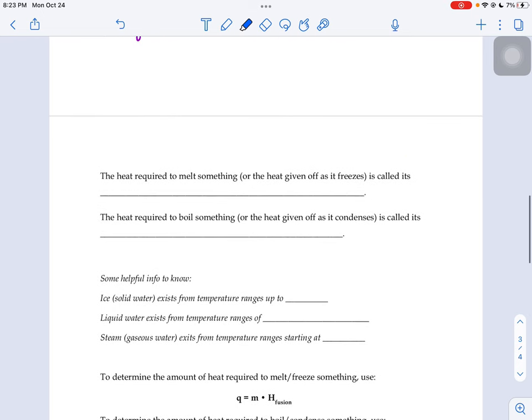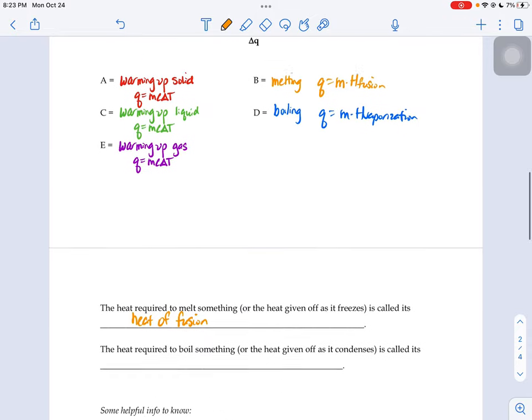So that heat needed to melt something or given off as that heat, if an object is freezing, is called its heat of fusion. It says here is the heat required to melt something or the heat given off as it freezes.